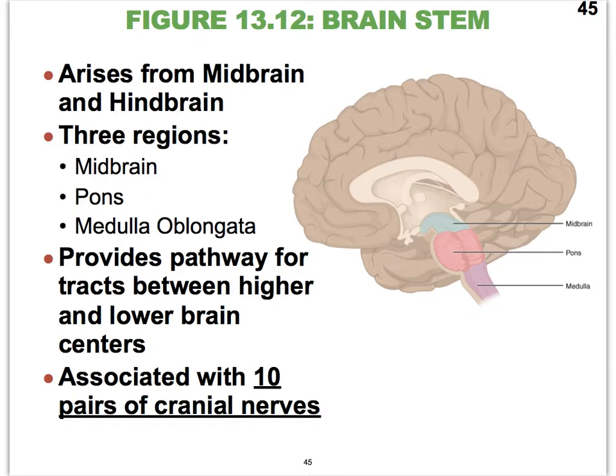There are three primary brain vesicles. In plain old English, we call them the forebrain, the midbrain, and the hindbrain. Or in more scientific terms, we call them the prosencephalon, the mesencephalon, and the rhombencephalon. Here we're finally starting our discussion on the brain stem, and it arises from the midbrain and the hindbrain — those are your two other primary brain vesicles.